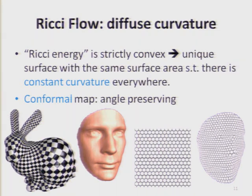A conformal map means: if you draw two curves that intersect on the surface, there is an intersection angle. If you look at the matching of the two curves on the target surface, the intersection angle remains the same. To visualize it: this is computed using VC flow to deform a bunny to a sphere. We map checkerboard images onto the sphere and map them back to the bunny — you can see all intersection angles remain 90 degrees and are still orthogonal at every corner. Another visualization: circles tangent to each other — neighboring circles remain tangent after mapping.